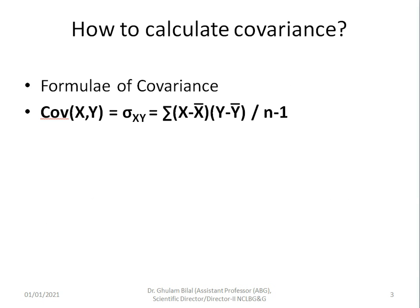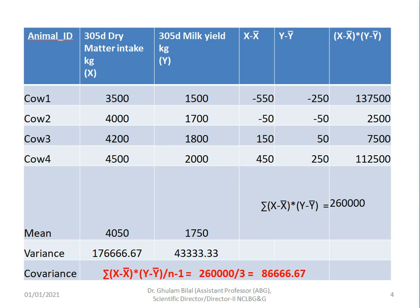The formula for covariance is a little bit tricky. Covariance of xy, written as σxy, is equal to the summation of (x minus x̄) multiplied by (y minus ȳ), with this whole expression divided by n minus 1, where n is the number of individuals in the sample or population.